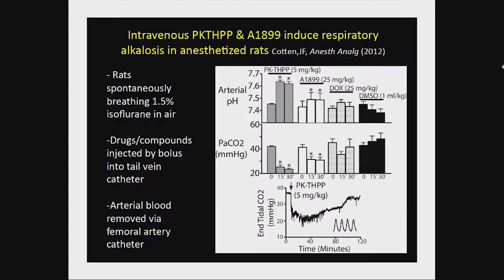We performed arterial blood gas analysis on animals instrumented with a femoral artery catheter. PKTHPP induced a marked alkalosis at 15 and 30 minutes after drug administration, due largely to a marked decrease in PaCO2 — a raging respiratory alkalosis. A1899 was less striking, and doxapram even less so. In an intubated anesthetized rat, you can see a marked decrease in end-tidal CO2 as the animal blows off CO2, and a single bolus lasts about an hour.